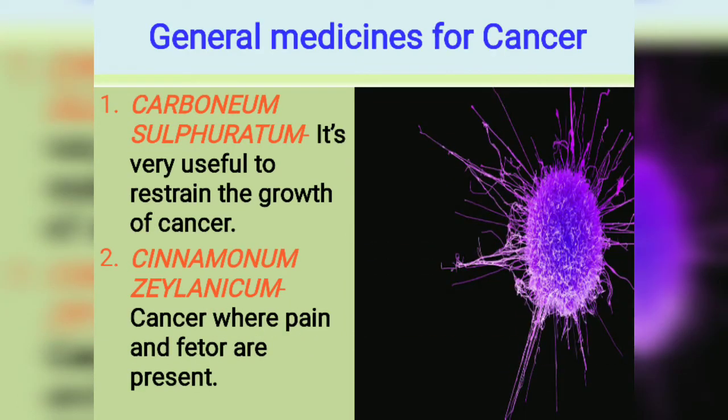Now let us move to the most important part of this presentation — general medicines for cancer. The first one is Carbonium Sulphuratum, which is very useful to restrain the growth of cancer.